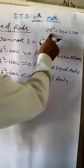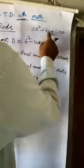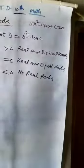X square coefficient is A, X coefficient is B, and the constant term is C.